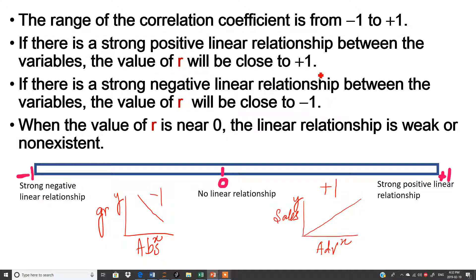The same thing is written here. If there is a strong positive linear relationship — linear means all the points are on one line — the value of r will be close to positive 1. If there is a strong negative linear relationship, the value of r will be close to minus 1. If the value of r is near to 0, the linear relationship is weak or non-existent.